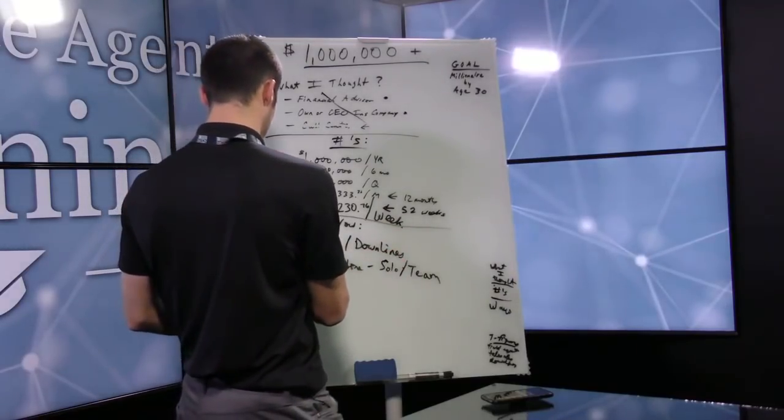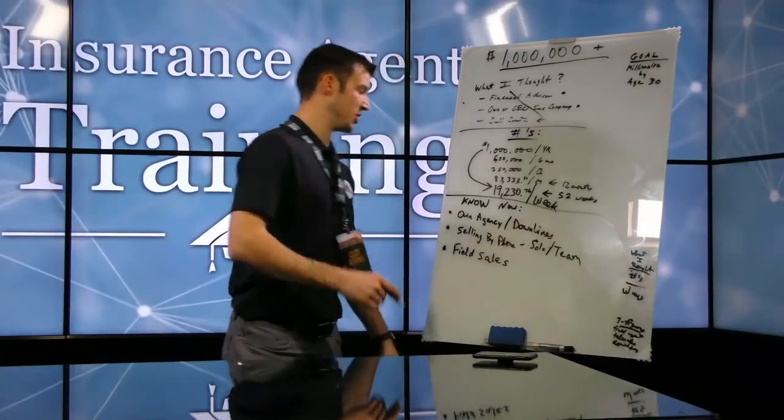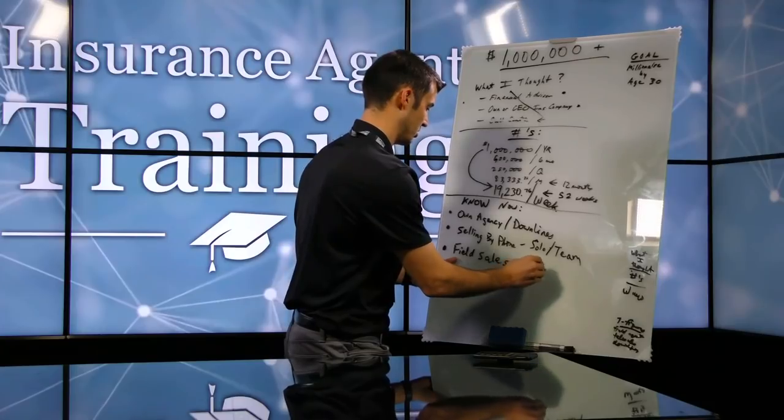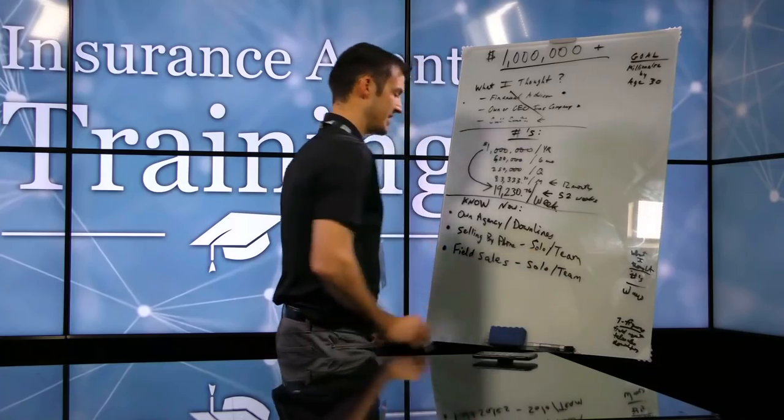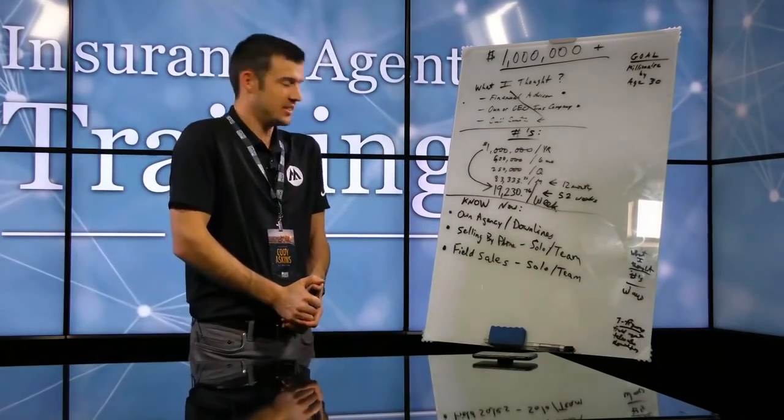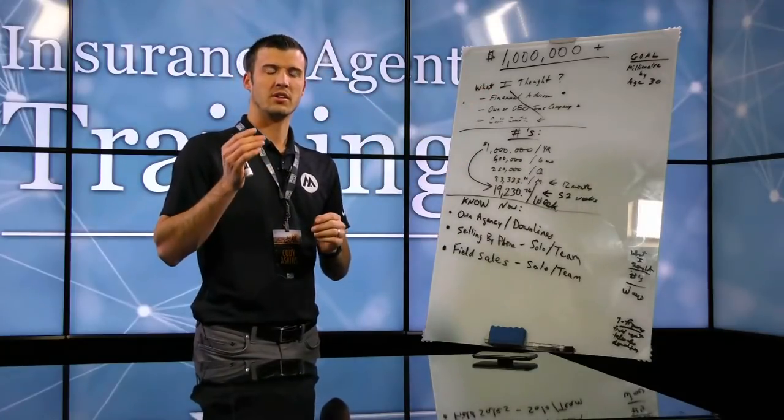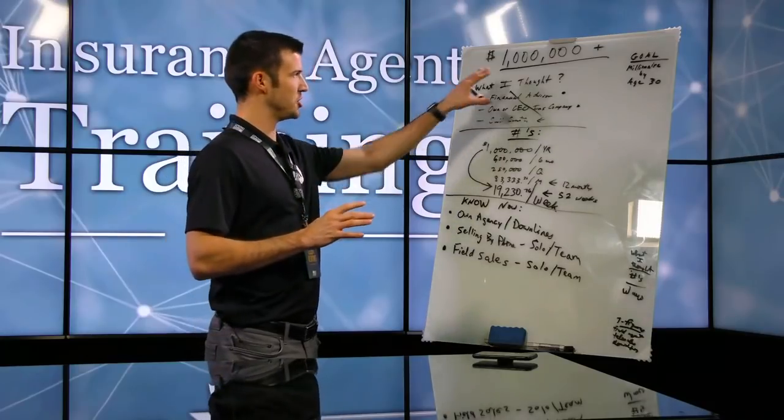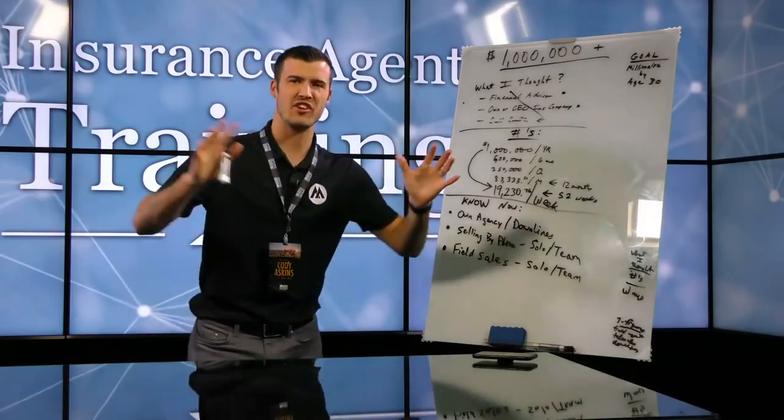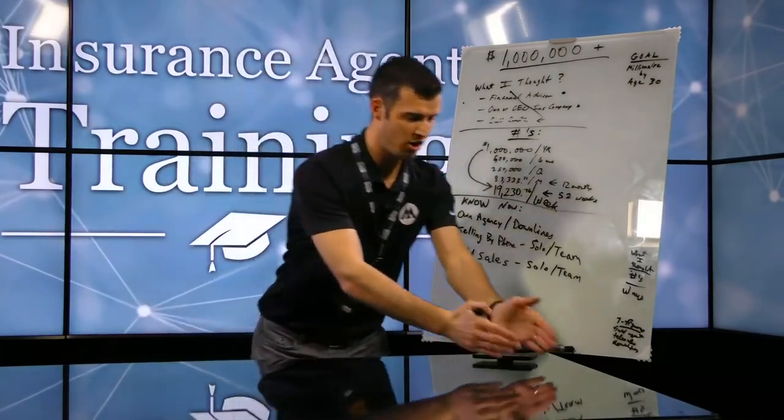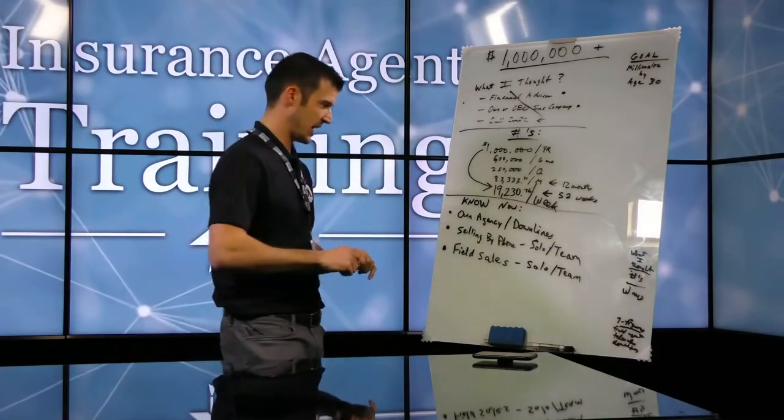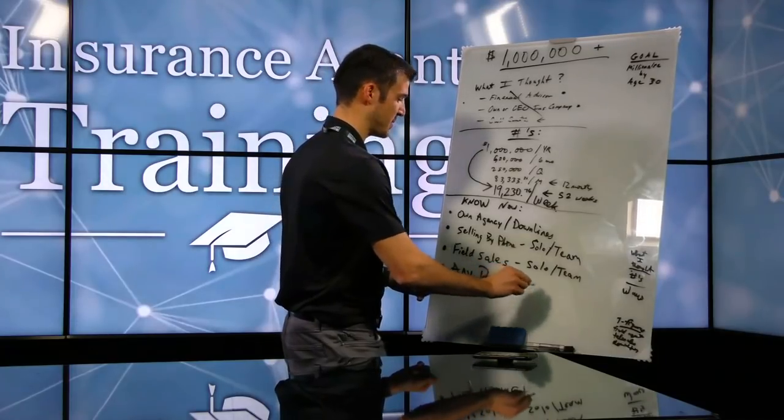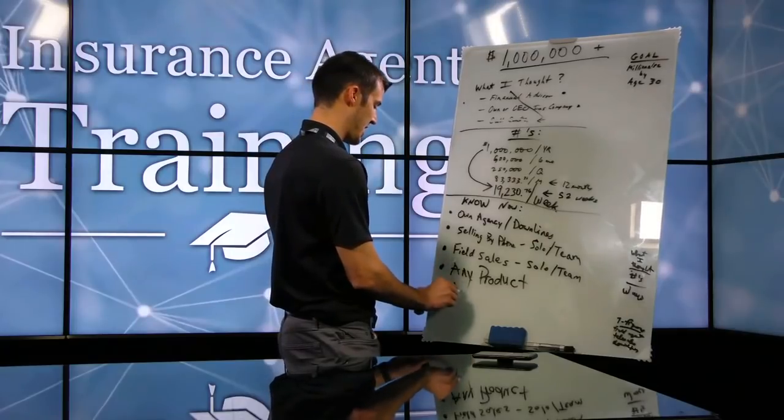How about field sales? Can you make seven figures going out and just selling in the field? Again, either solo or with a team? Yeah, you can. I mean, I know of agents that have done seven figures by themselves selling a variety of insurance products. Any insurance product that you can think of, you can get to where you can make seven figures selling it. Everybody's always like, hey, you've got to sell this insurance product or this one or Cody, I only sell this or Cody, I only sell this or Cody, you need to sell this. You can sell any of them. Any product.